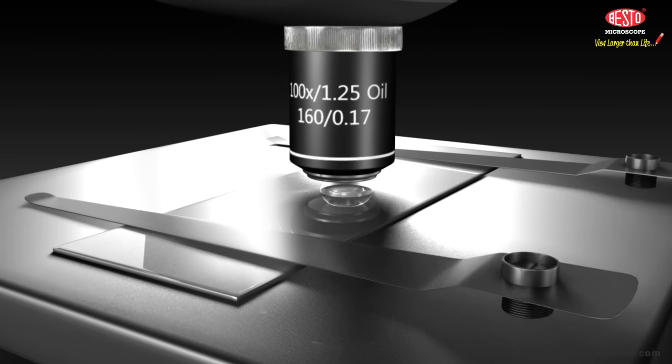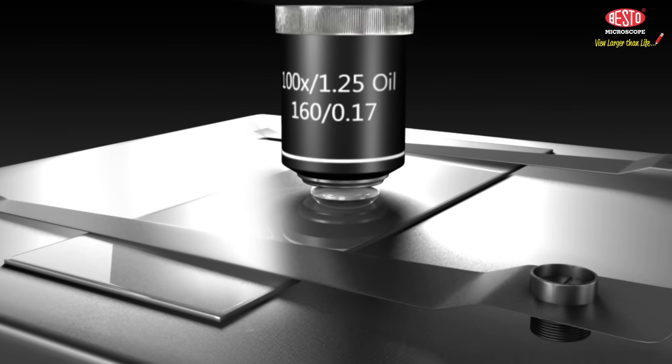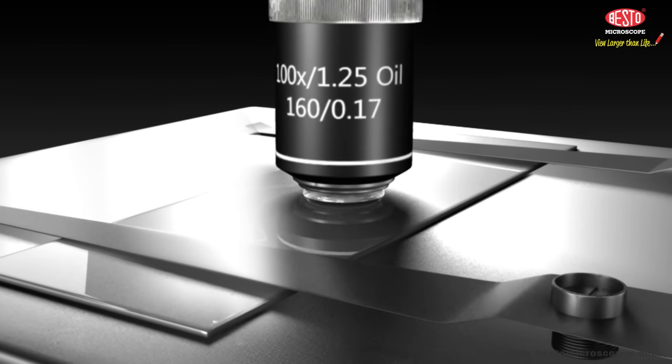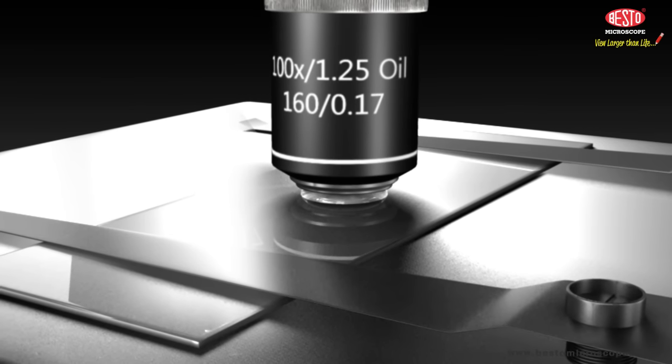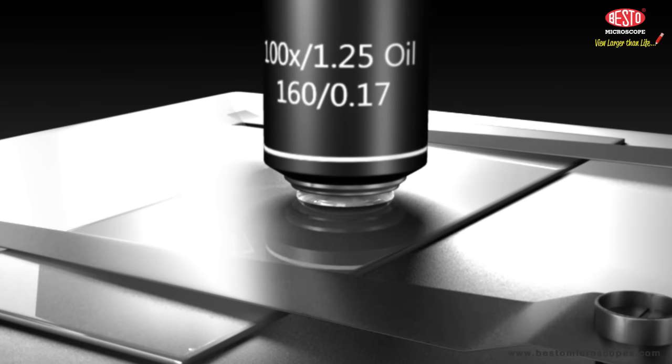This lens is used by placing a drop of oil, cedar wood oil, on the top of the cover slip and adjusting the position of the front lens of the objective so that it is touching the oil drop.